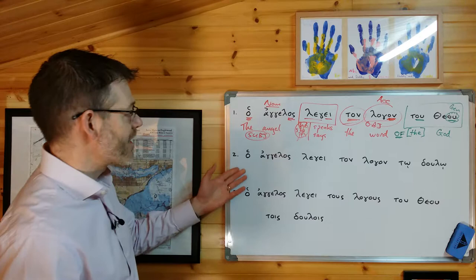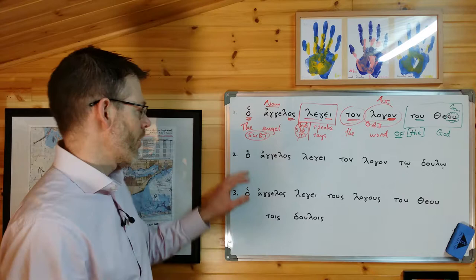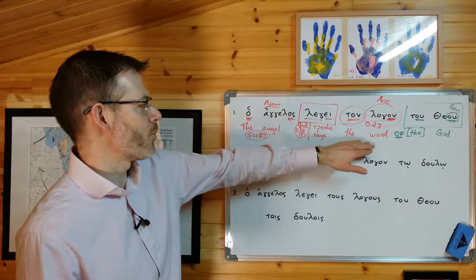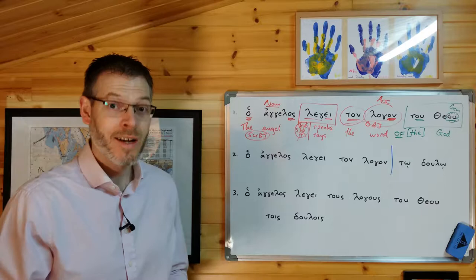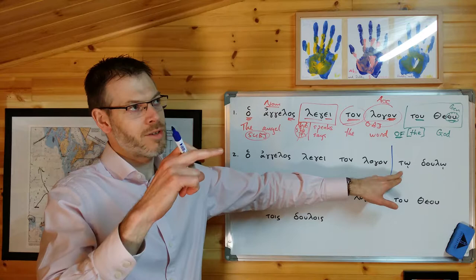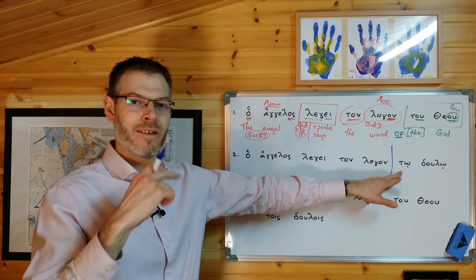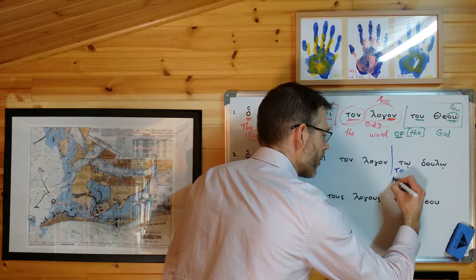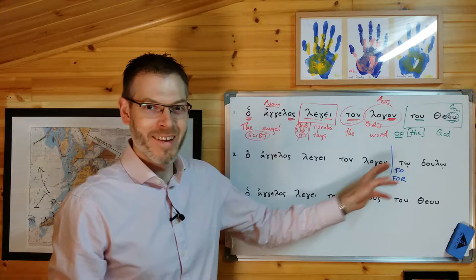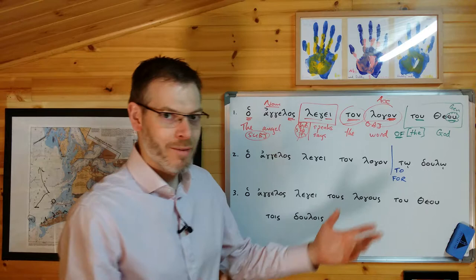Let's take a different colour to look at this one. And to begin with, it's the same. Ho angelos legei ton logon. Well, that's the same as here. The angel speaks the word. But here, the end of the sentence is different. Tō doulō. Now, how are we supposed to deal with this? Well, you remember, this is in which case? Doulos, doulon, doulō, doulō. Nominative, accusative, genitive, dative. This is in the dative case. It's singular.